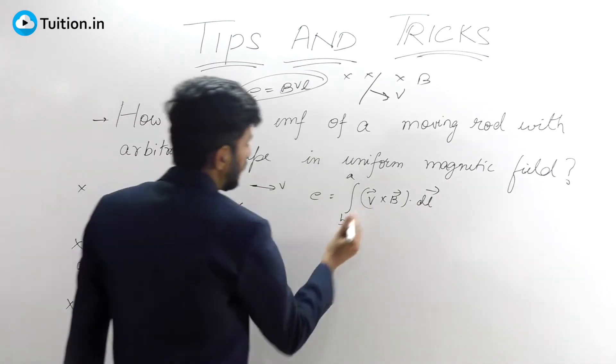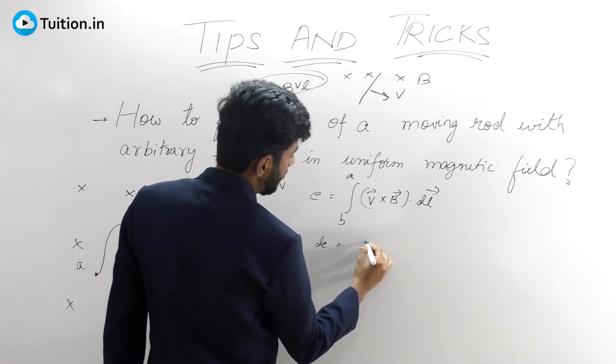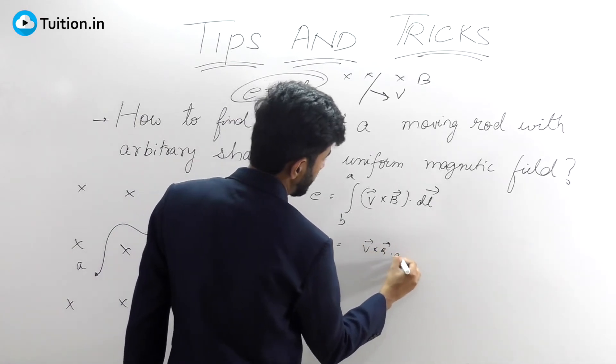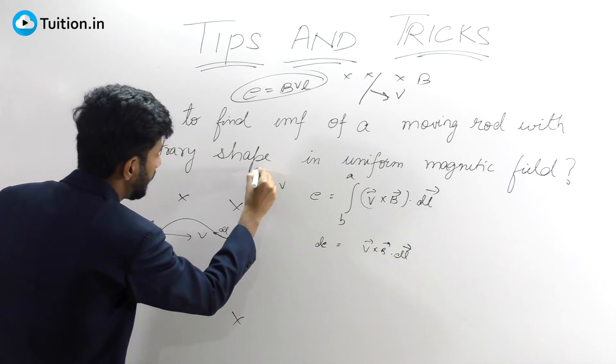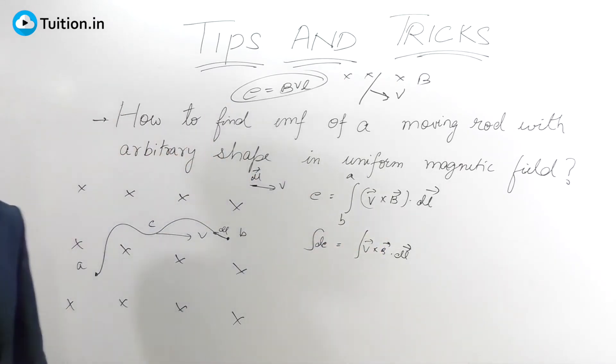Then you will calculate the small EMF using this formula: V cross B dot DL for that small DL length, and then from A to B you will integrate that to get the net EMF.